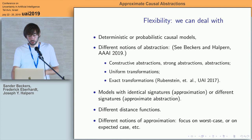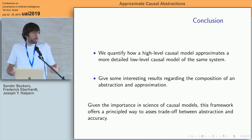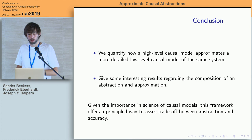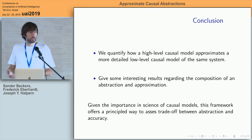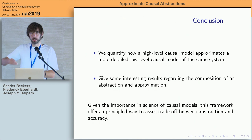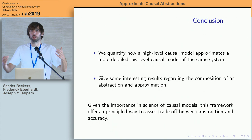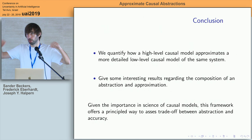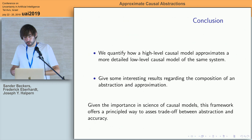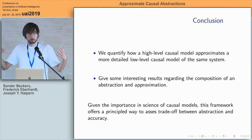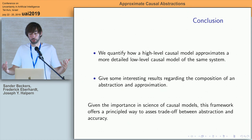In conclusion, we quantify how a high-level causal model approximates a more detailed low-level causal model of the same system. We also give results regarding composition: given a notion of exact abstraction and a notion of approximation, we show under what conditions an approximate abstraction can be decomposed as a composition of an approximation and an abstraction, and under what conditions it cannot. We believe the value of this work is that, since causal models and abstractions matter across many fields of science, this framework offers a principled way to assess the trade-off between abstraction and accuracy.